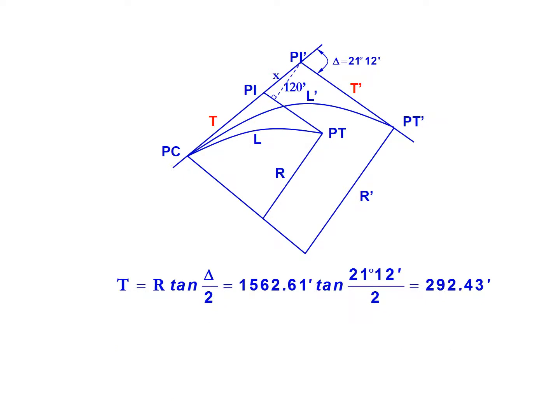We're going to take that tangent to find our T prime, our new tangent. We're going to add x to that, and x is positive because we're moving outward. So 292.43 feet plus 331.83 feet gives us a T prime, a new tangent, of 624.27 feet.